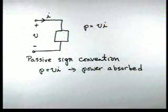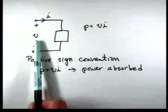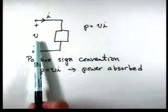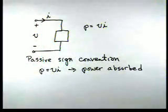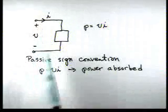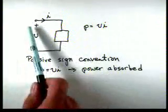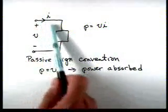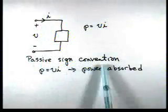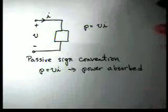If you review chapter 1, you'll notice that the passive sign convention was discussed. Looking at the diagram, we have the voltage and current labeled. If we take the product of V times I, that's the power. If the variables satisfy the passive sign convention — current entering the plus terminal and flowing out the negative — that gives us the power absorbed. If it doesn't fit that convention, then it gives us the power supplied.